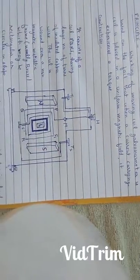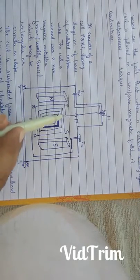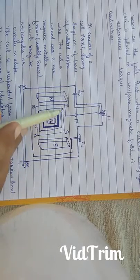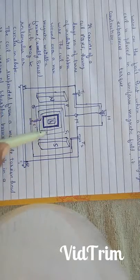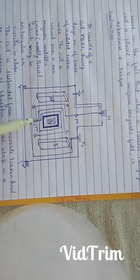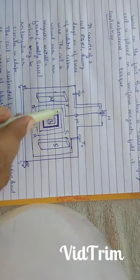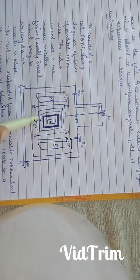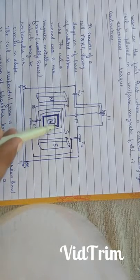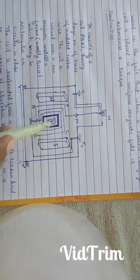Construction. A moving coil galvanometer consists of a coil PQRS1 having large number of turns of insulated copper wire. This coil is wound over a non-magnetic metallic frame which may be circular or rectangular.